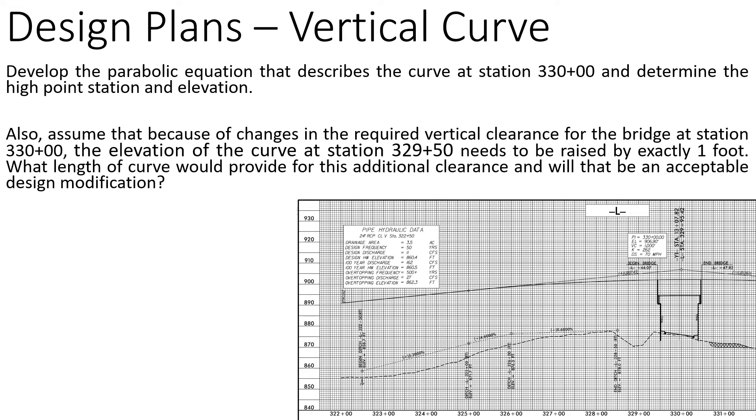We're also given a second problem to answer, which is assuming that because of changes required in the vertical clearance for the bridge at this same vertical curve, station 330, the elevation of the curve at station 329+50 needs to be raised by exactly one foot.